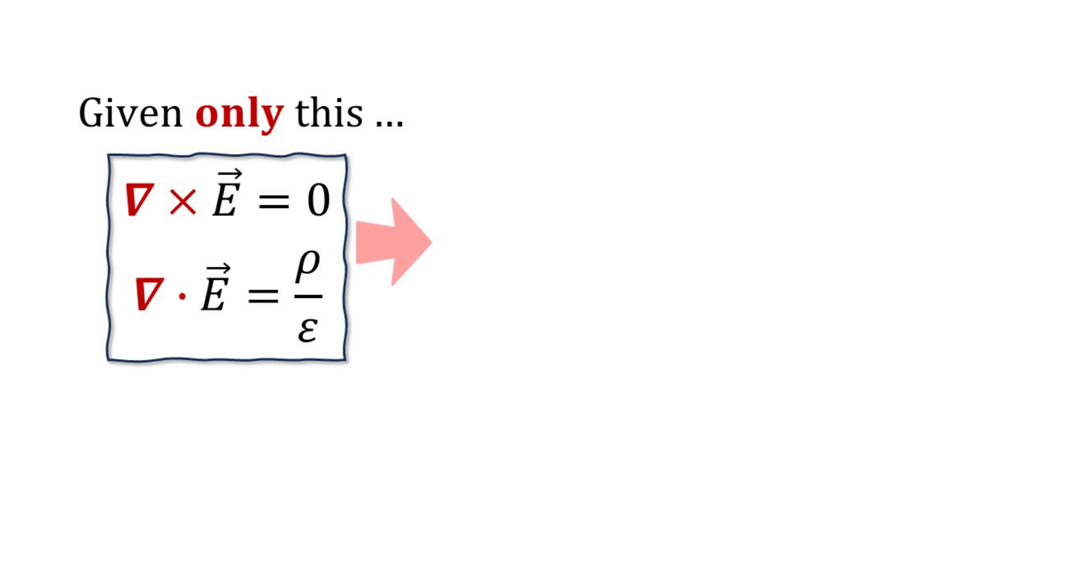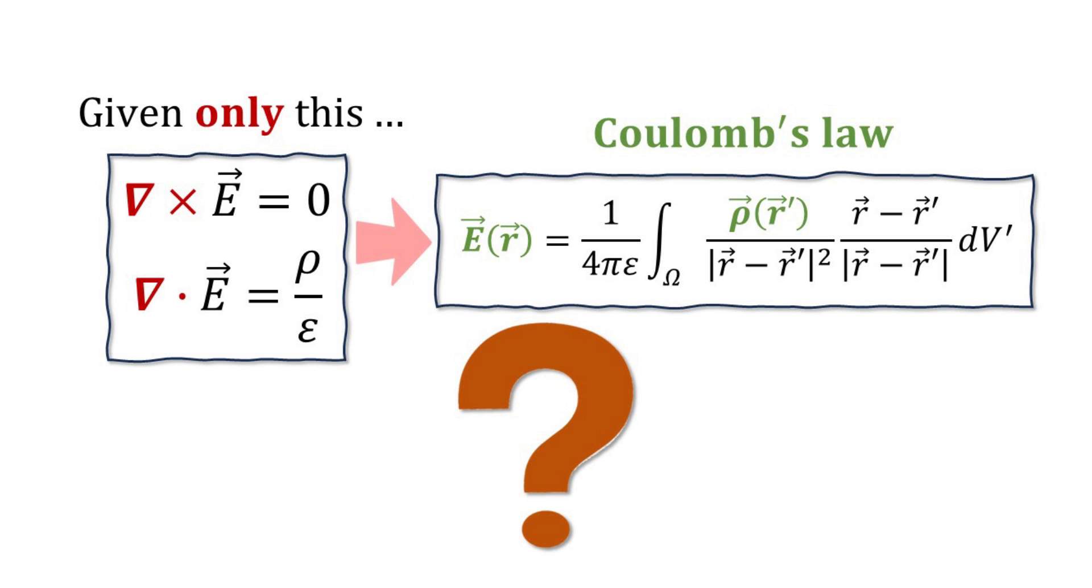So, given only Gauss's and Faraday's law, and without any new physics or assumptions, can you arrive at the well-known Coulomb's law? The purpose of this video is to show you how one can arrive at this result in a few conceptually intuitive steps.